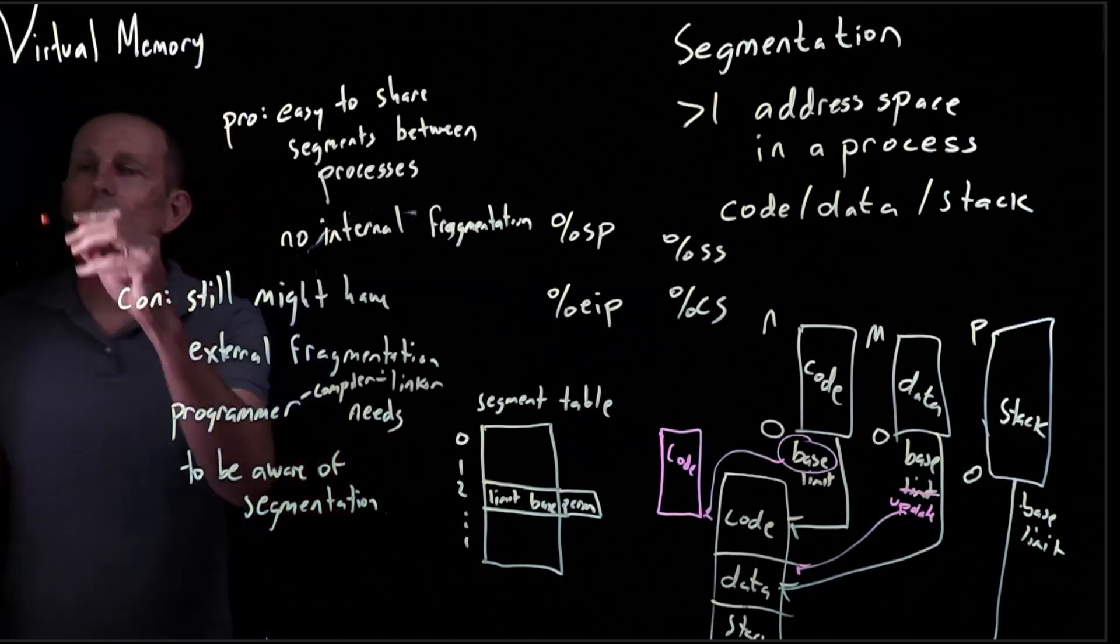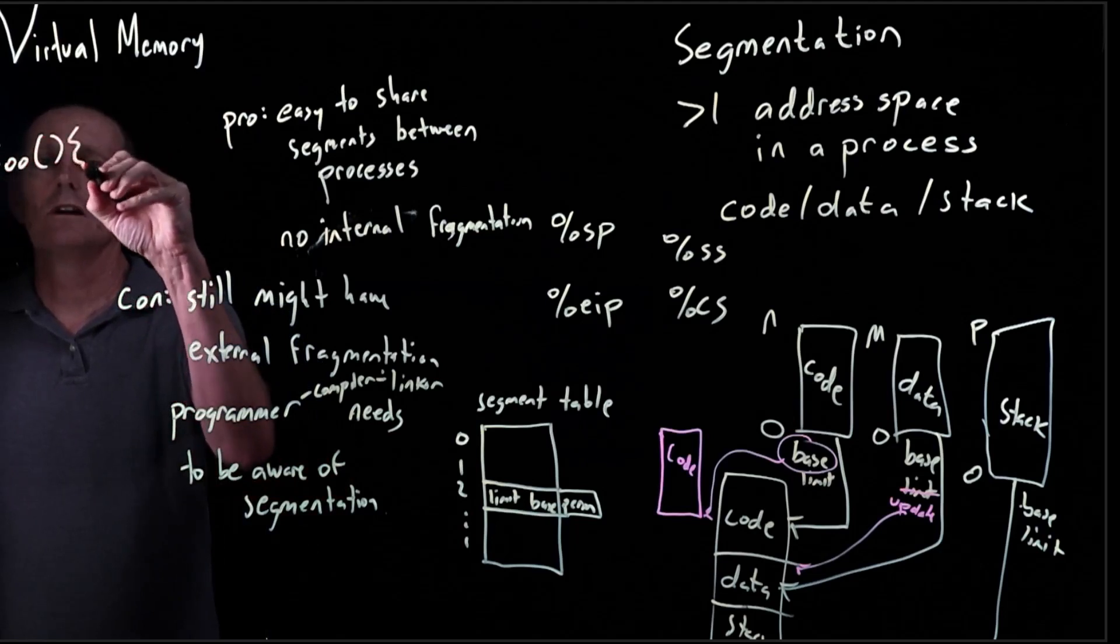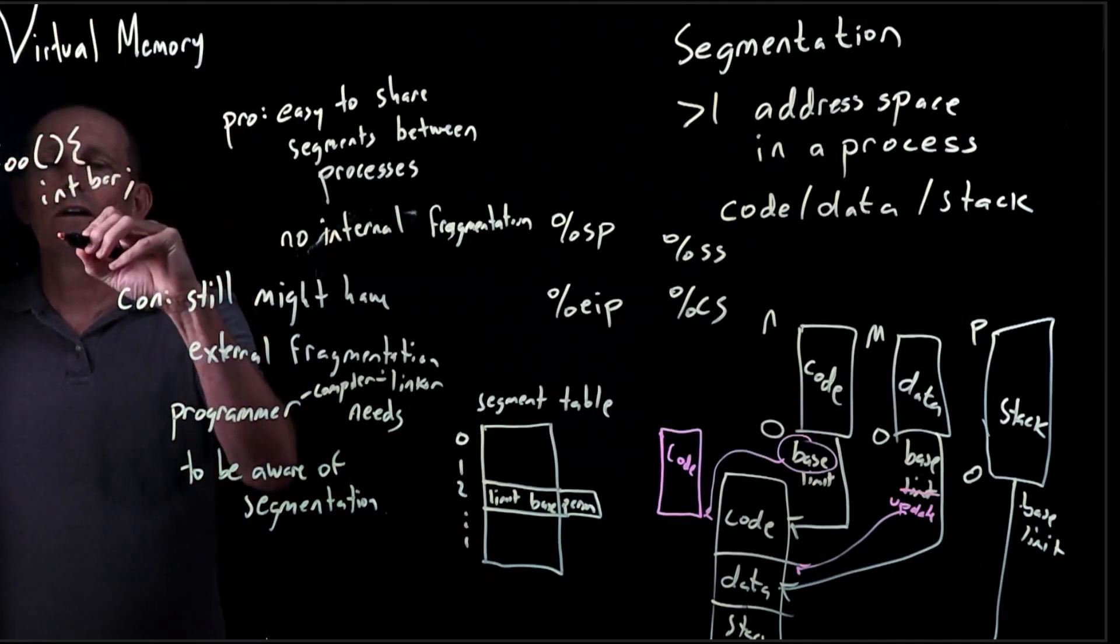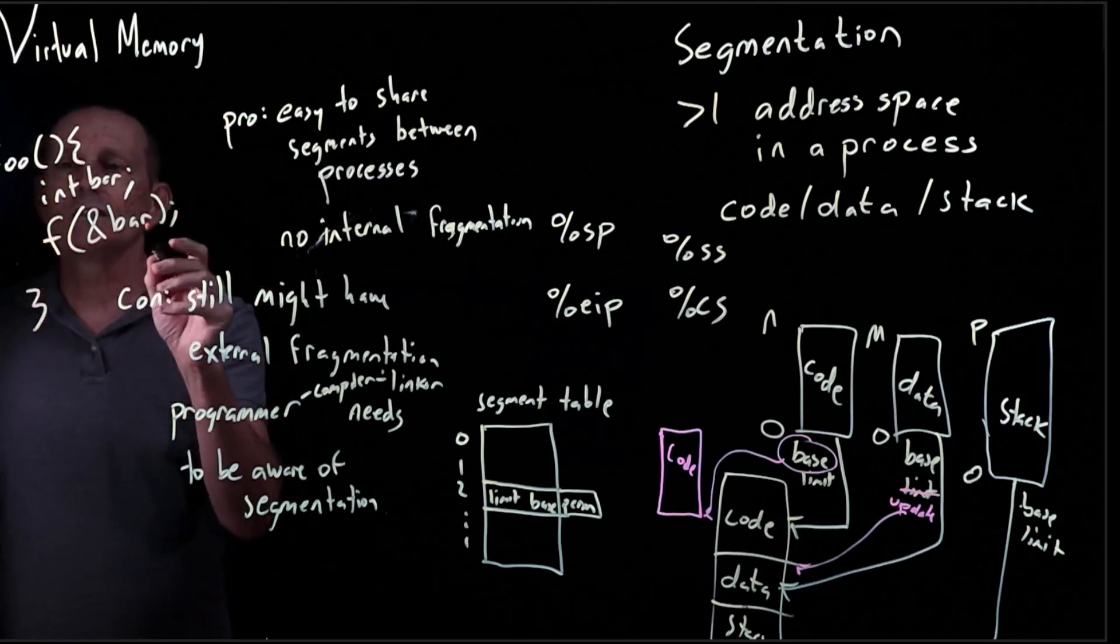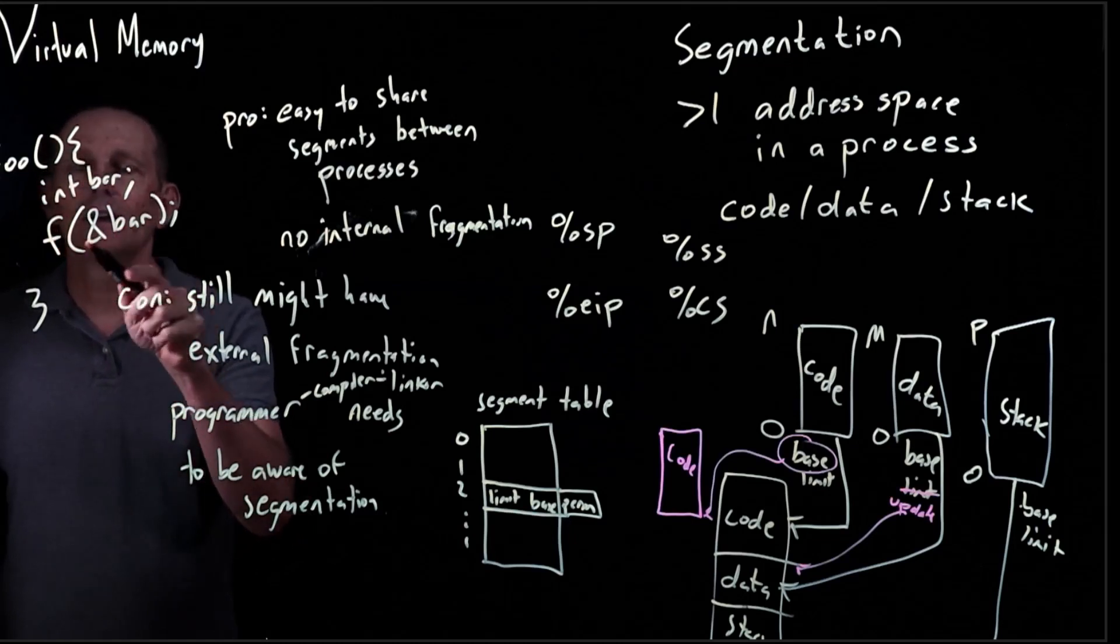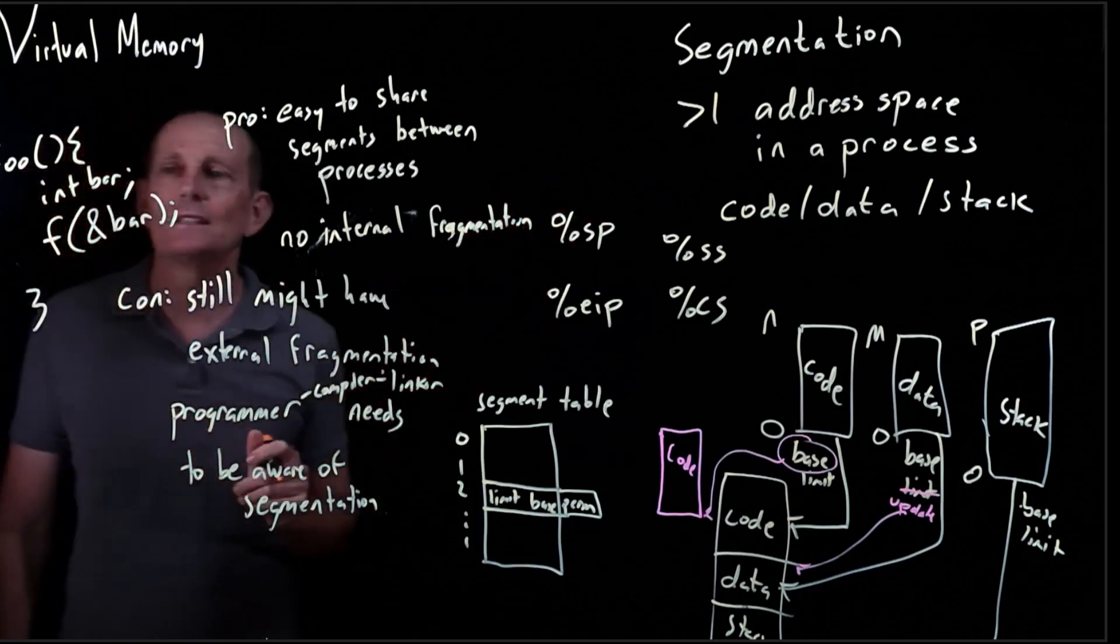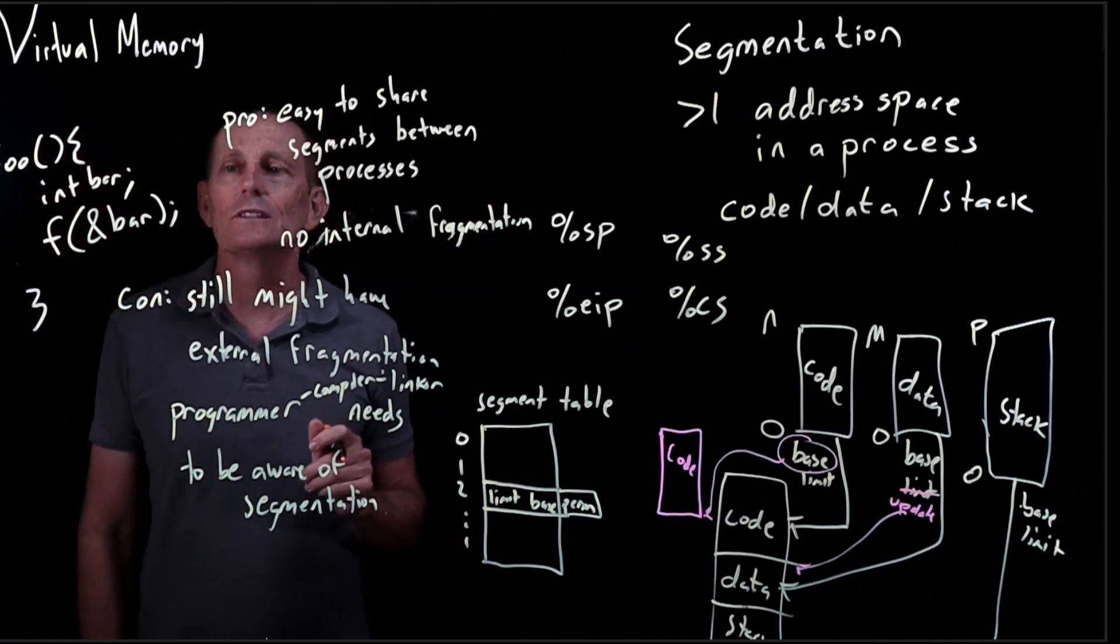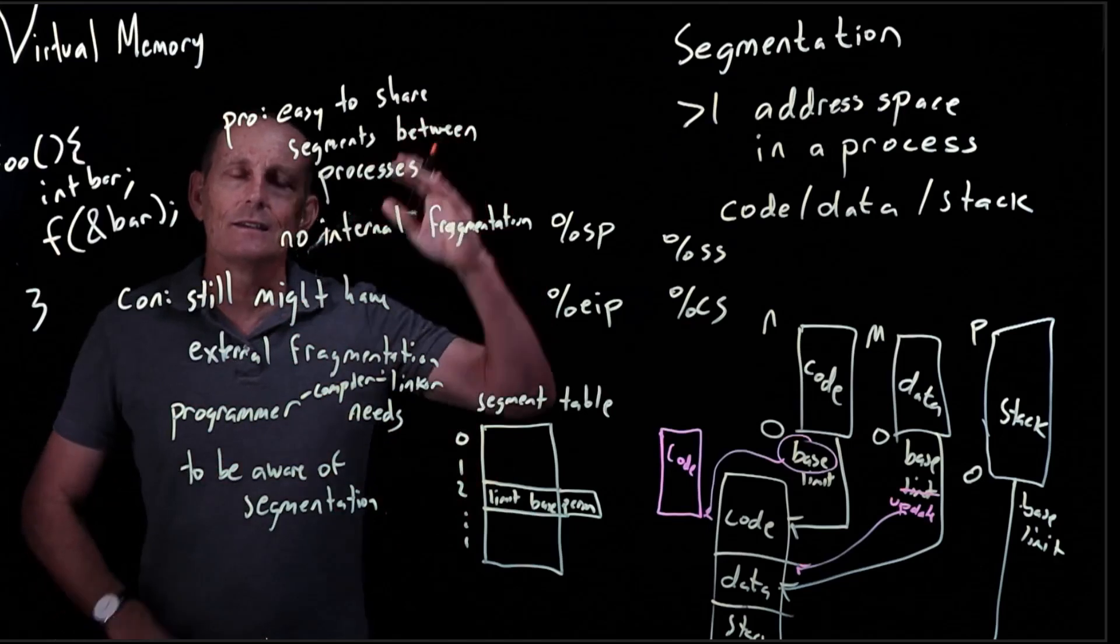I'll give you an example. If you have some C code, a function foo, and you call another function f with the address of bar - since bar is on the stack, the address of bar needs to include not only the address, but also which segment this is in. We would include the segment register. So that can provide some complications as opposed to having just a completely flat address space.